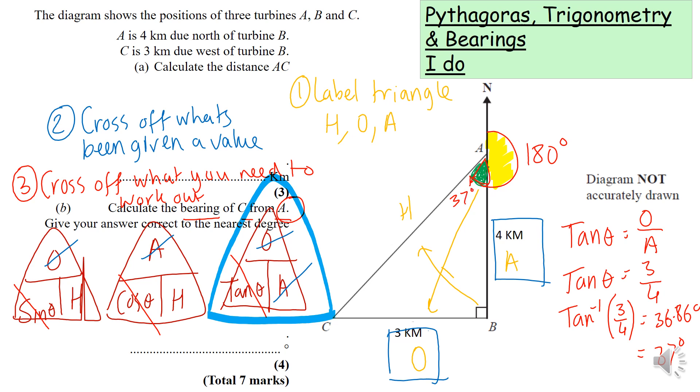The full bearing from C from A - we need this full bearing over here. The full bearing is that 180 degrees that we looked at initially, plus that small angle which we worked out of 37, which will leave us with the answer of 217 degrees.